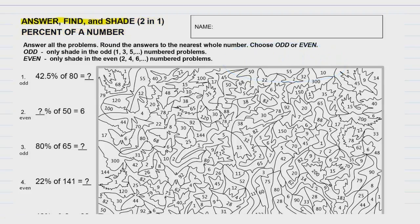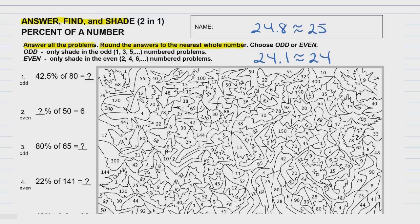Let's take a look at the directions. First off, it says answer all the problems. Then it says round the answers to the nearest whole number. A whole number is like 1, 2, 5, 6, 100. So for instance, if you had 24.1, since it says round to the nearest whole number, you would round that to 24, because it's closer to 24 than 25. If I gave you 24.8, that's closer to 25, so you would round it to 25. And that's rounding or estimating to the nearest whole number.